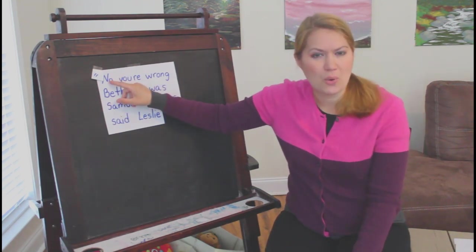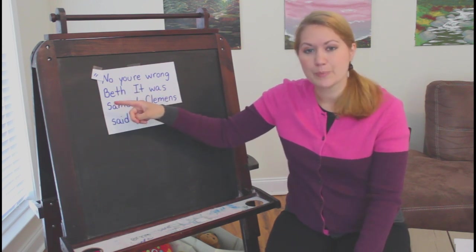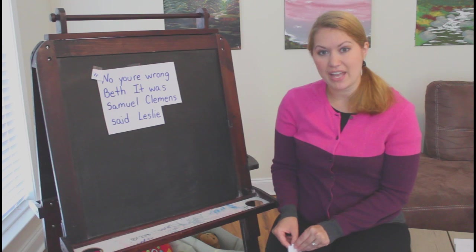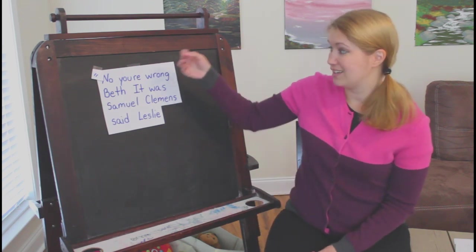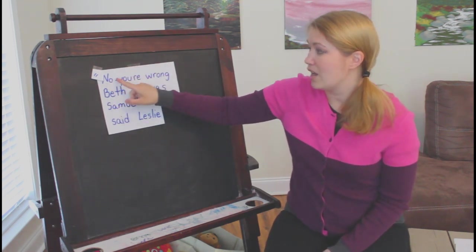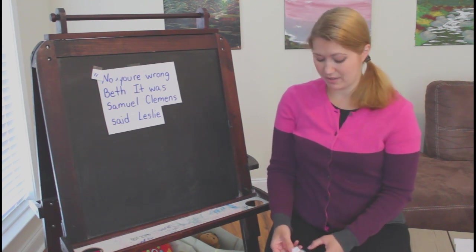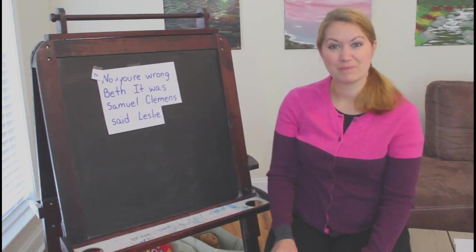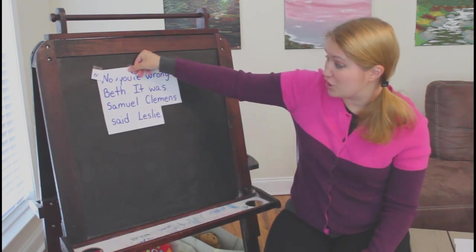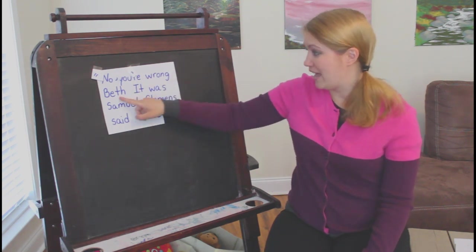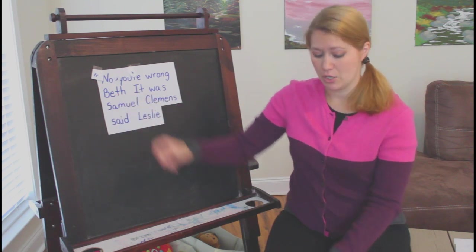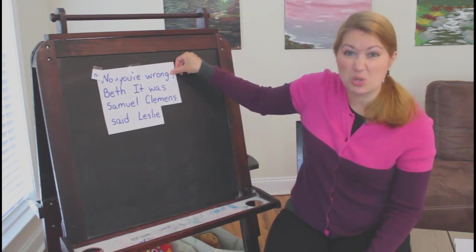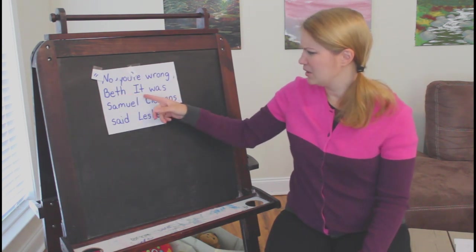After the word no, there's something we're supposed to put in a sentence — a comma. Every time you use the word no in a sentence, you kind of pause after that, so to show that pause you're going to put in another comma. No comma, you're wrong, Beth. It was Samuel Clemens. I noticed another word — you're. That looks really weird; it needs an apostrophe there for you are. You're. Wrong. Beth — it's talking to Beth. What do you do to show that you're talking to someone? You put a comma before their name whenever you talk to a person. No, you're wrong, Beth.